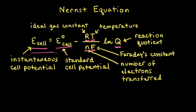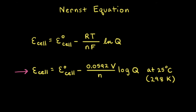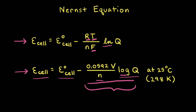So this is one way to write the Nernst equation. Let's compare this form to a simplified form. In the simplified form, E of the cell equals E naught of the cell minus 0.0592 volts divided by N times the log of the reaction quotient Q. Going back to the first form, if we assume the temperature is 25 degrees Celsius or 298 Kelvin, multiply by the ideal gas constant, divide by Faraday's constant, and convert natural log to log, we end up with 0.0592 volts divided by N times the log of Q for the second term.